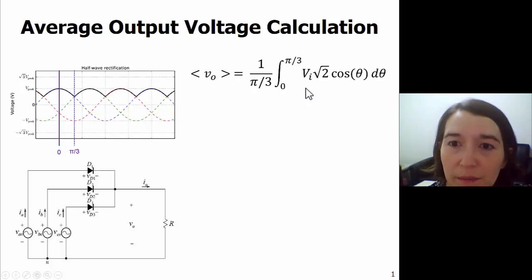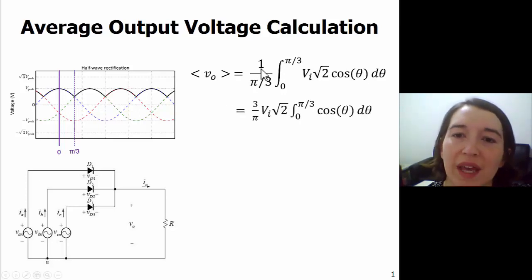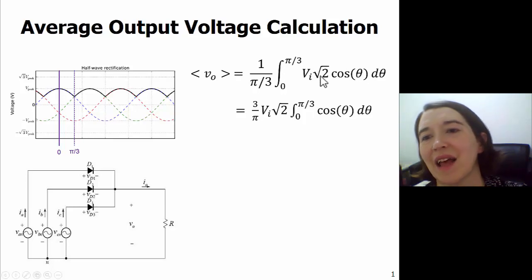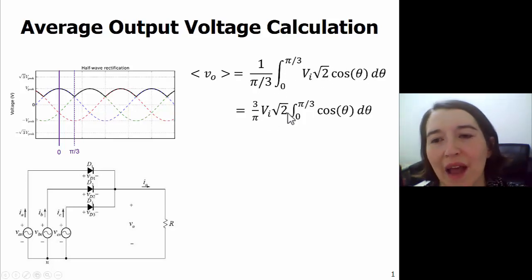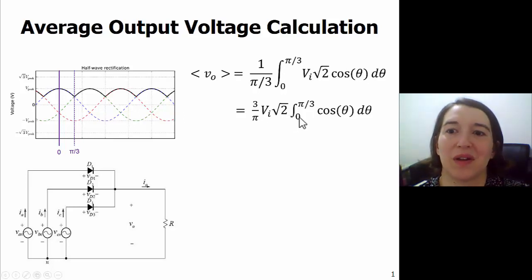So we just evaluate this integral. We can flip the input here so we get three over pi, and we can move our VI and root two out of the integral because they're constant, and then we simply evaluate a cosine.